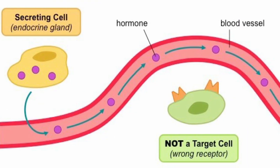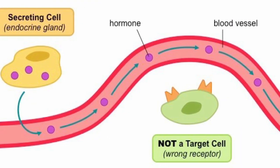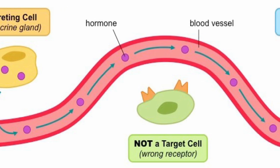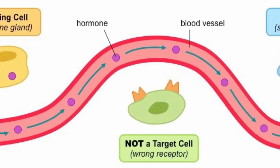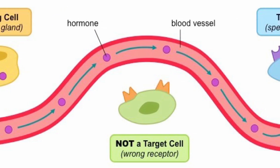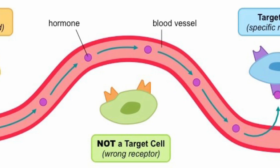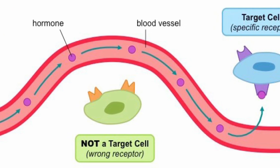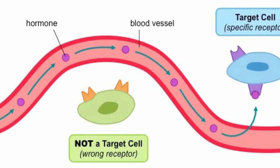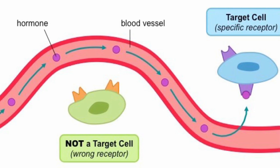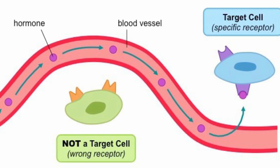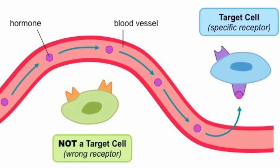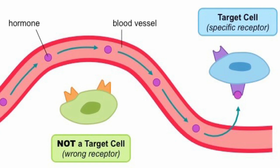There are four main types of chemical signaling. The first is endocrine signaling, in which specialized cells release hormones into the bloodstream, which can travel throughout the body to affect distant target cells. Examples include insulin, thyroid hormones, and adrenaline.